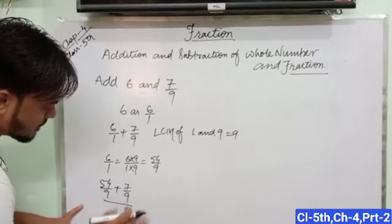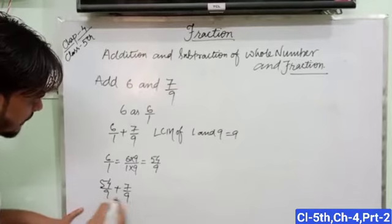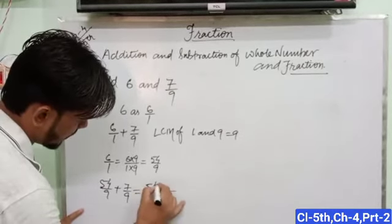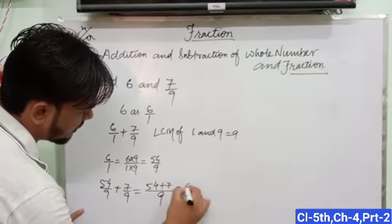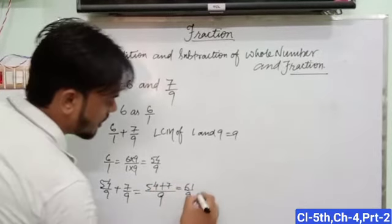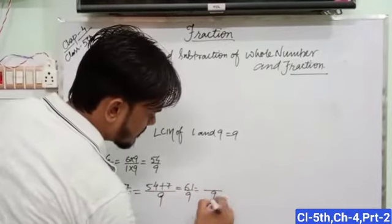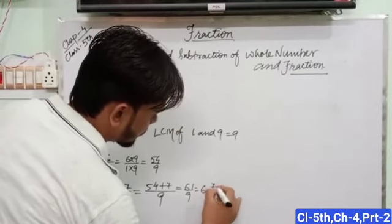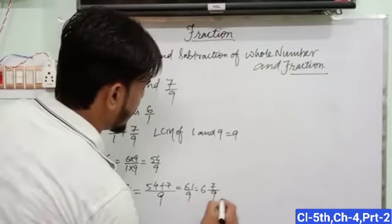Now here both have the same denominator. So write 54 plus 7, which equals 61 upon 9. We can also write it as a mixed fraction, 6 and 7 upon 9.